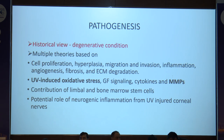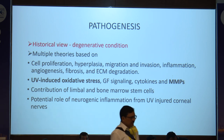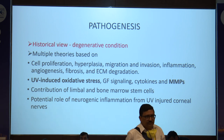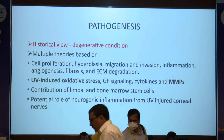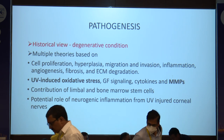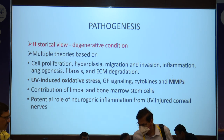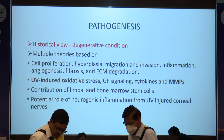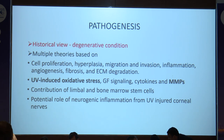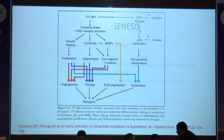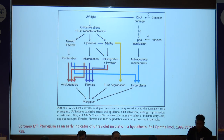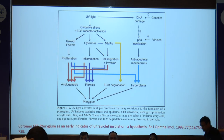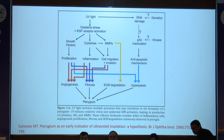Coming to the pathogenesis, initially it was supposed to be a degenerative condition, but now over a period of time multiple theories have been based on cell proliferation, hyperplasia, and migration. The most important is of course UV-induced oxidative stress, and also the contribution of limbal and bone marrow stem cells. This is a diagrammatic representation of all the various factors and processes involved in the pathogenesis.